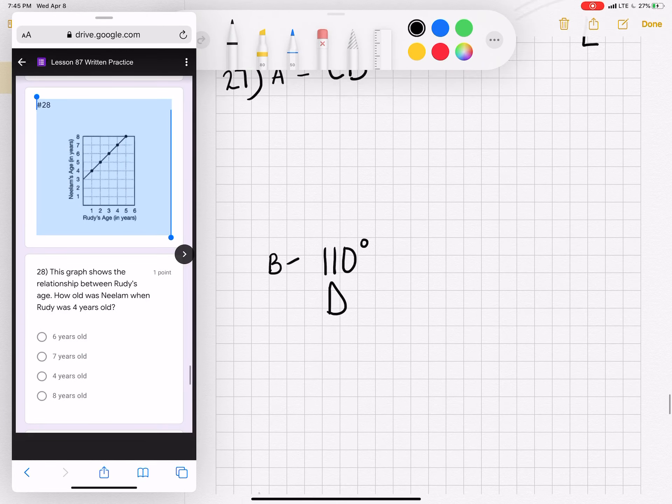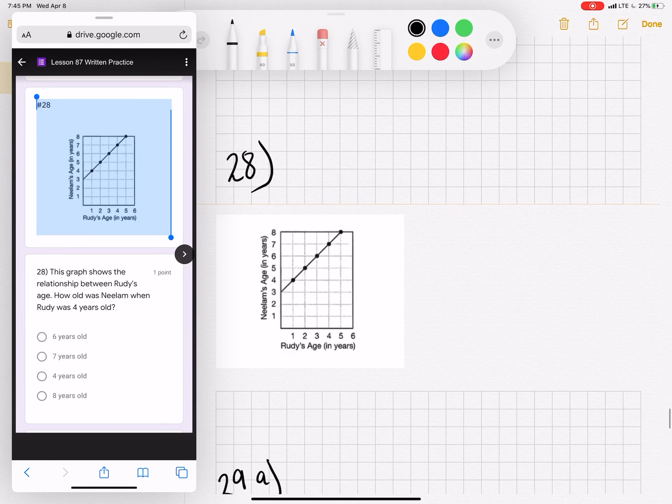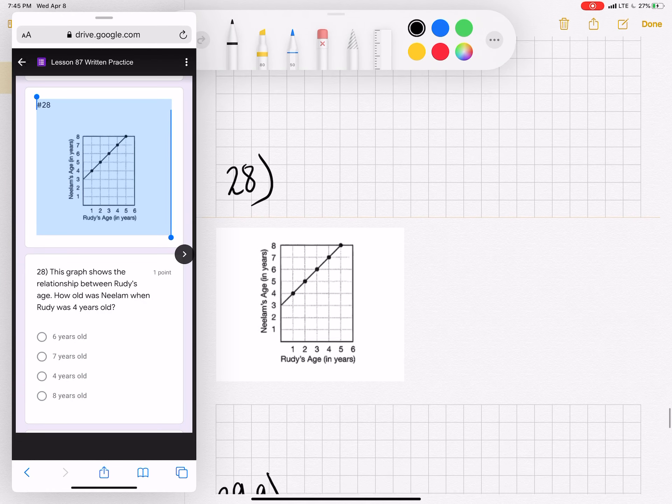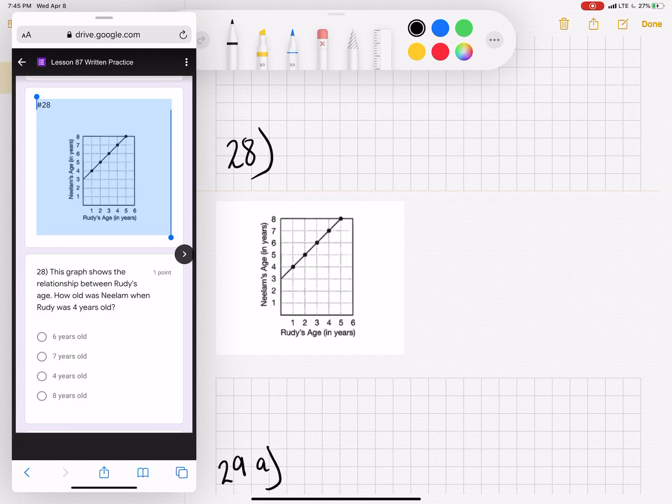Number 28. It shows the relationship between Ruby's age. How old was Neelam when Ruby was four years old? So down at the bottom, you'll see Ruby's number four, and you're going to go up to the dot on number four. You're going to find that Neelam was seven.